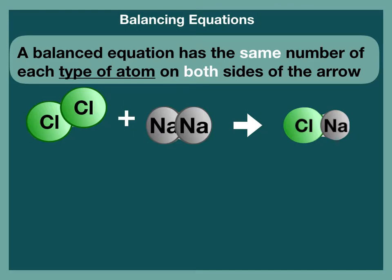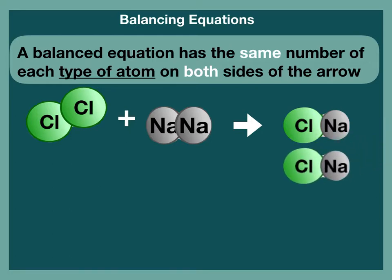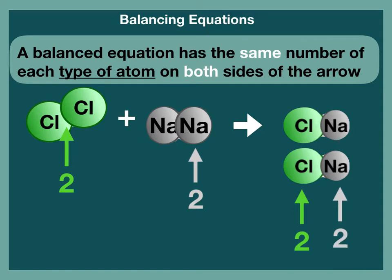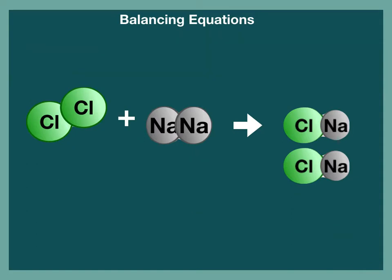There are two chlorines on the left and one chlorine on the right. Two sodium on the left and two sodium on the right. It turns out that we need to add one more molecule of sodium chloride. Now we have two chlorines on the left and two chlorines on the right, and two sodium on each side. This is the visual model of the equation.